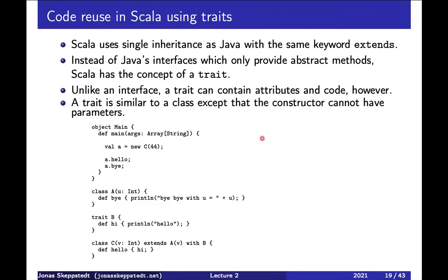Let's see a simple example. Here we have this object class and we create a new object of type C. C extends A, which takes a parameter, so this must be a class. And then we want this function from B, so we can use the trait B since it takes no parameter. A trait cannot have a parameter.